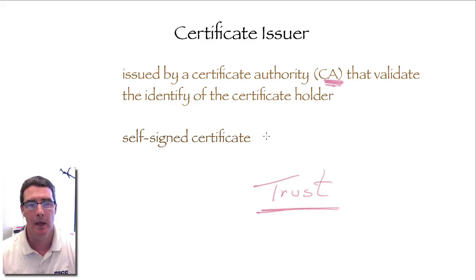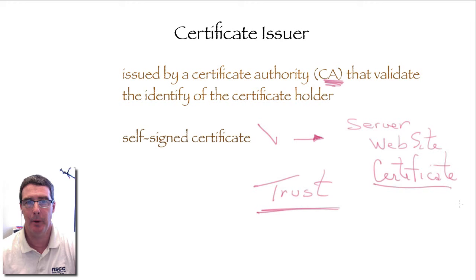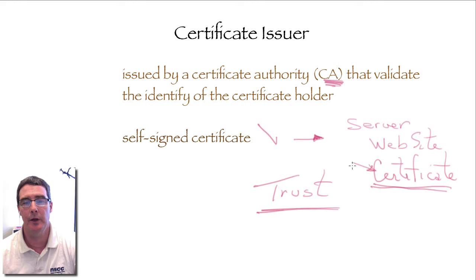You can have self-signed certificates. A self-signed certificate is where you build your own server, put up a website, and use the built-in ability to create a certificate. If you want to use SSL communications, you have to have a certificate — that's part of the mechanism built into SSL. You can generate your own certificate and declare you're John Smith from the Acme Corporation, but you have no one validating that. That's called a self-signed certificate.